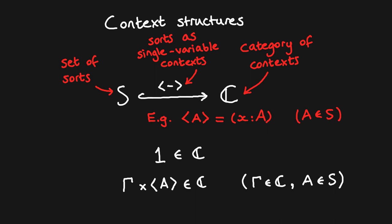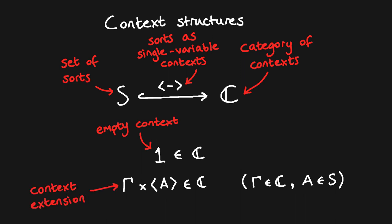The category of contexts must have a terminal object, which represents the empty context. And for each context Gamma and type A, we must be able to form their product, representing extending the context Gamma by a fresh variable of type A. However, we don't require the category C to be Cartesian, which means that in general contexts cannot be concatenated.